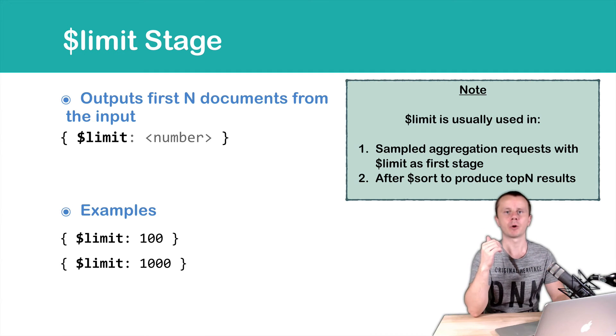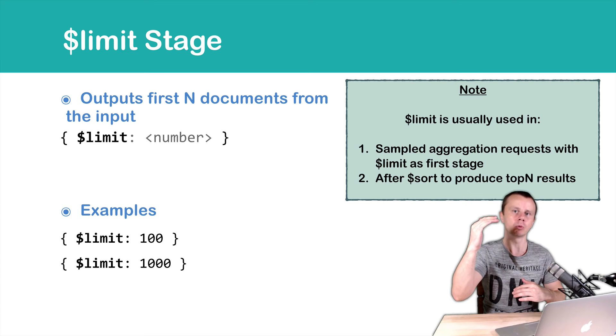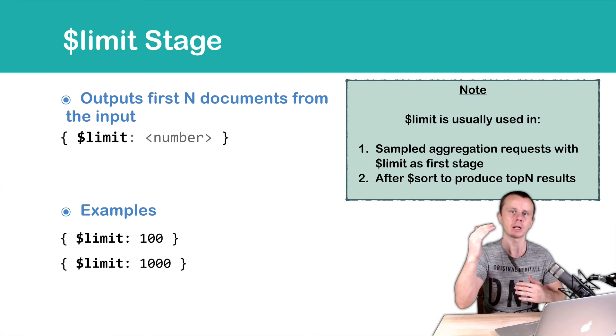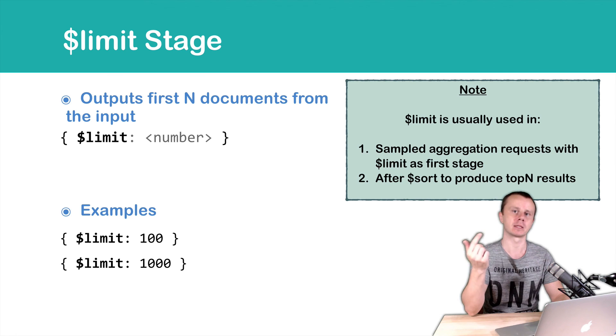The second case is when you perform, for example, match, then group, and then sort, and you get a long list of results. Then you want to make this list smaller, so you output just the first 10 or 20 results. In this case, you can use limit as the last stage.